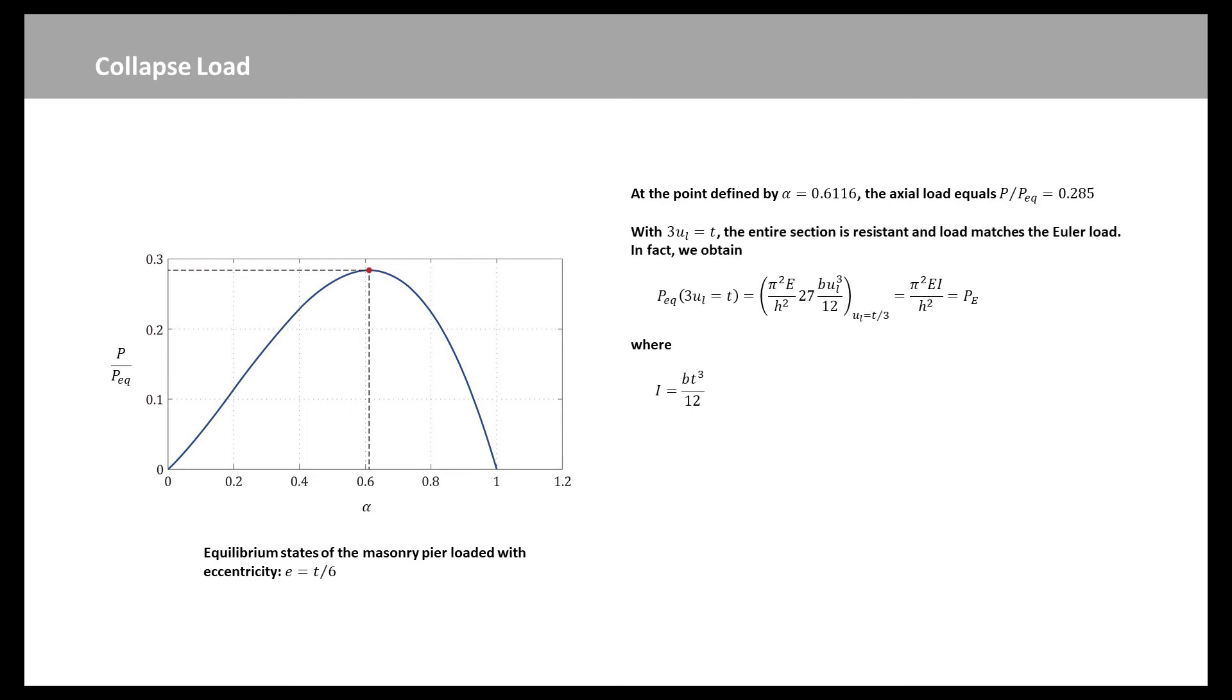In particular, when the point load at the head section is located at the edge of the core section with 3UL equal to T, the entire section is resistant, and load PEQ matches the Euler load PE. So we obtain this equation, where I is the second moment of inertia. Now the collapse of the pier loaded axially with higher eccentricity will come about under the axial load as shown here. Alternatively, highlighting the dependence of the critical load on the eccentricity E at the end sections of the pier, we have this equation. When the load is applied at the core edge of the end sections, we obtain PCR over PE equal to 0.285. For larger eccentricities, the reduction in the critical load with respect to the Euler load is greater. For E equal to half of T, the critical load vanishes altogether.